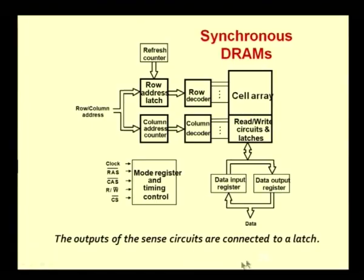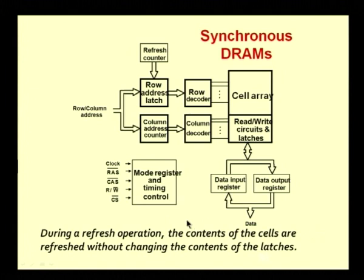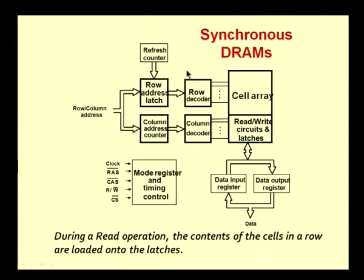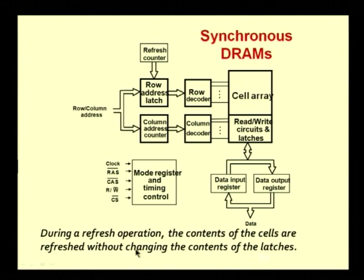The output of the sense circuits is connected to a latch. During a read operation, the contents of the cells in a row are loaded onto the latches. During a refresh operation, a refresh counter generates successive row addresses. When successive row addresses are generated, successive rows are selected by the row decoders and all the cells in that particular row are refreshed automatically. During the refresh operation, the contents of the cells are refreshed without changing the contents of the latches.